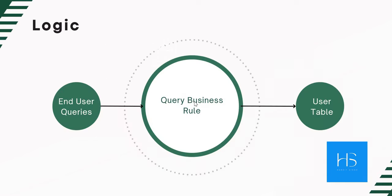This is the logic of how a query business rule works. A user tries to query a table — in this example, they are trying to query the user table — but before that, the query business rule runs. Here we can put a check: if the user is an admin or an ITIL user or not. If they are not, we put a query in between the request, so even though the end user tries to fetch all records, we make them see only the active records.